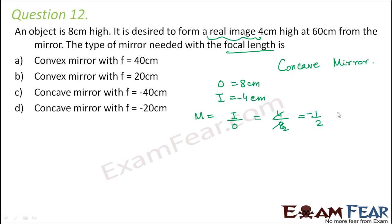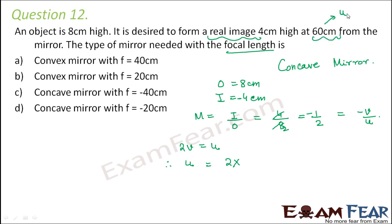We also know that magnification equals minus v/u. So from this we can say v/u = 1/2, therefore u = 2v. The image distance v is given as 60 centimeters, so u = 2 × 60 = 120 centimeters.